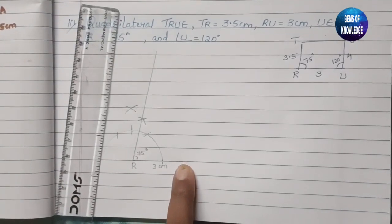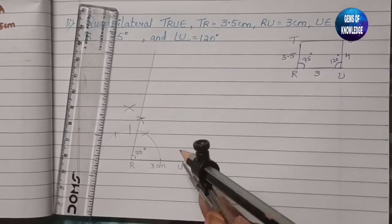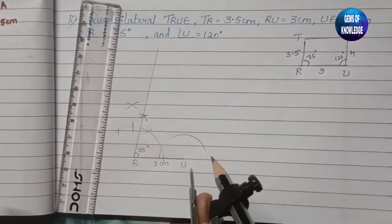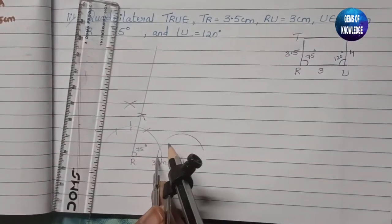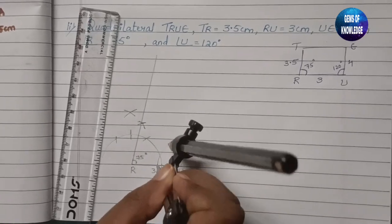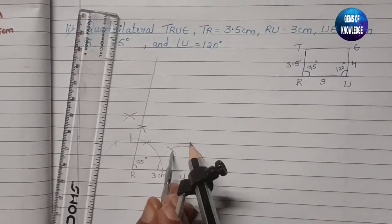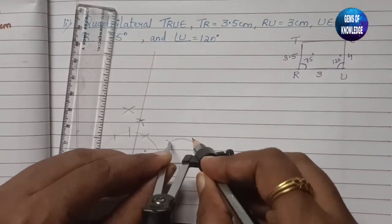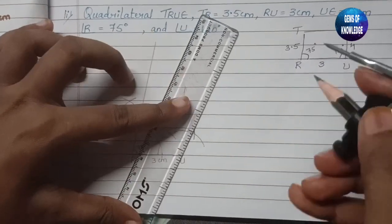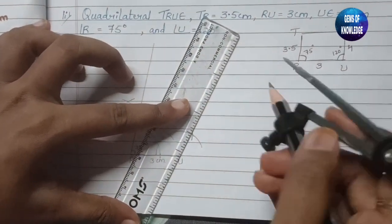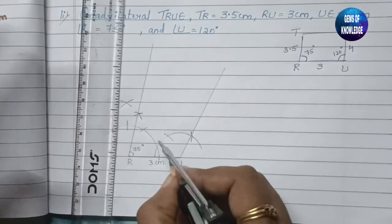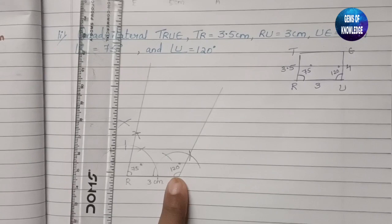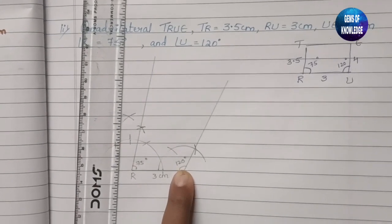Similarly, draw 120° at point U. From U, cut an arc; with the same measurement, the first mark gives 60° and the second gives 120°. Draw the line through the 120° mark — this is your 120° angle at U.